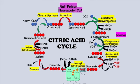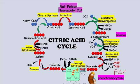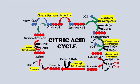Succinate dehydrogenase is also present in the electron transport chain as complex 2. A defect in it can lead to pheochromocytoma, also called PCC, a hormone-secreting tumour that can occur in the adrenal glands. Defects in fumarase can lead to another cancer — leiomyoma, which is in smooth muscles.